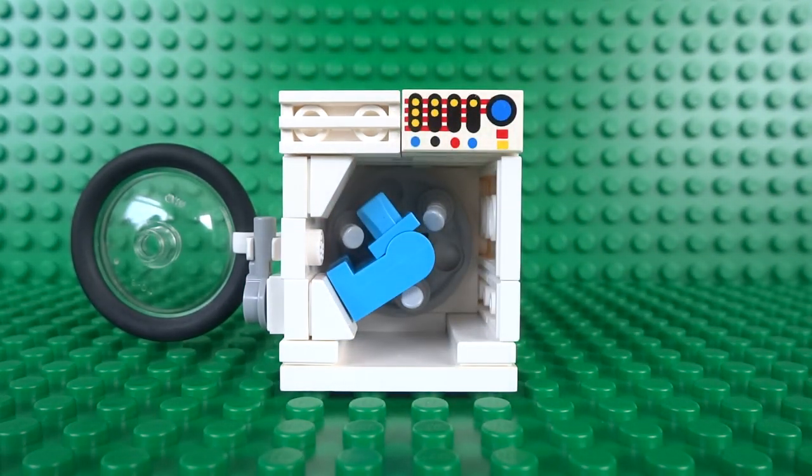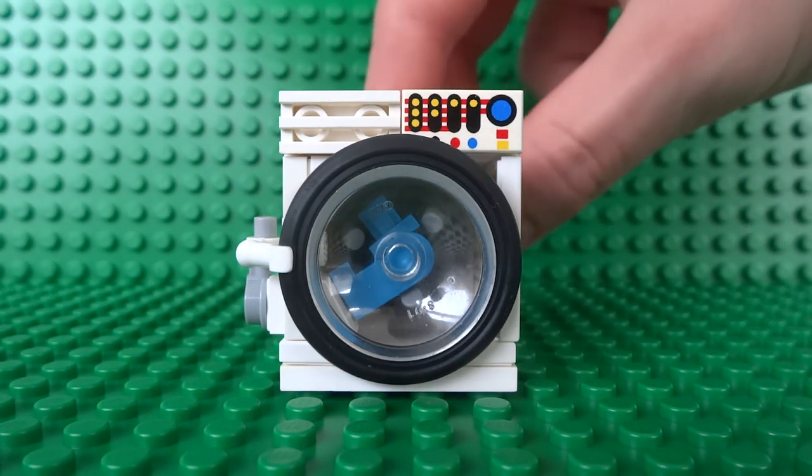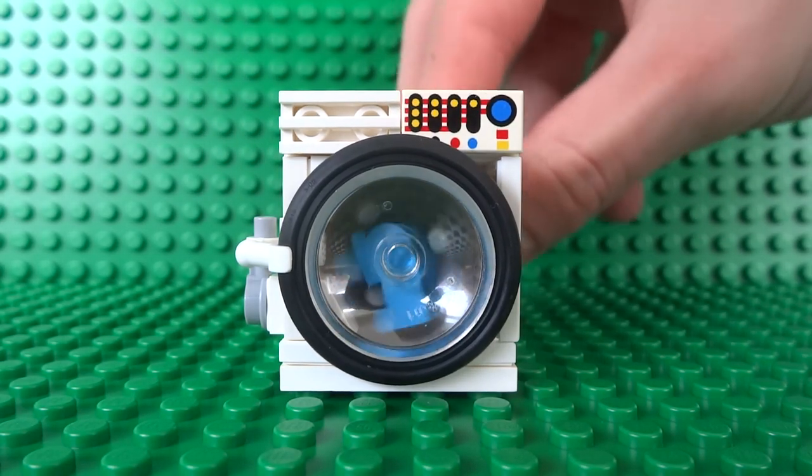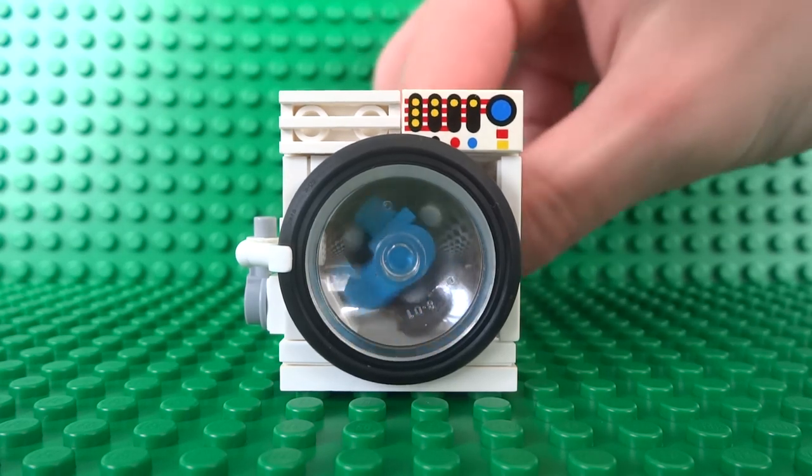Once everything's in place it's time to switch on the washing machine so you can turn it on by turning a handle at the back and as you can see the clothes inside start spinning around just like on a real life one.